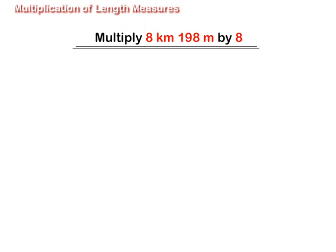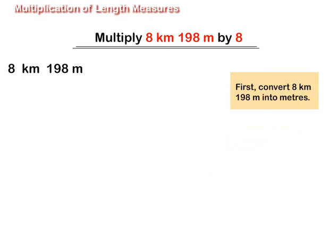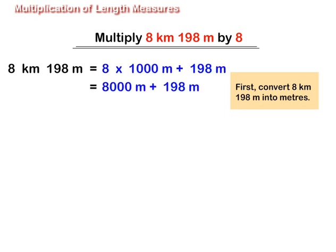Multiply 8 km 198 m by 8. First, convert 8 km. For this, multiply 8 by 1000 and add 198 m to it. We get 8,198 m.